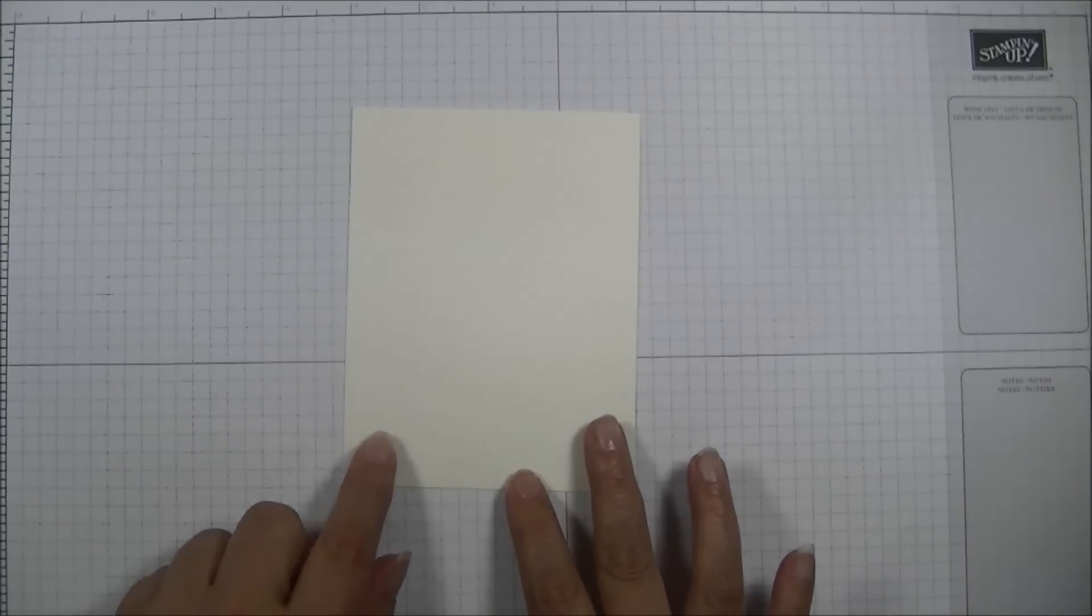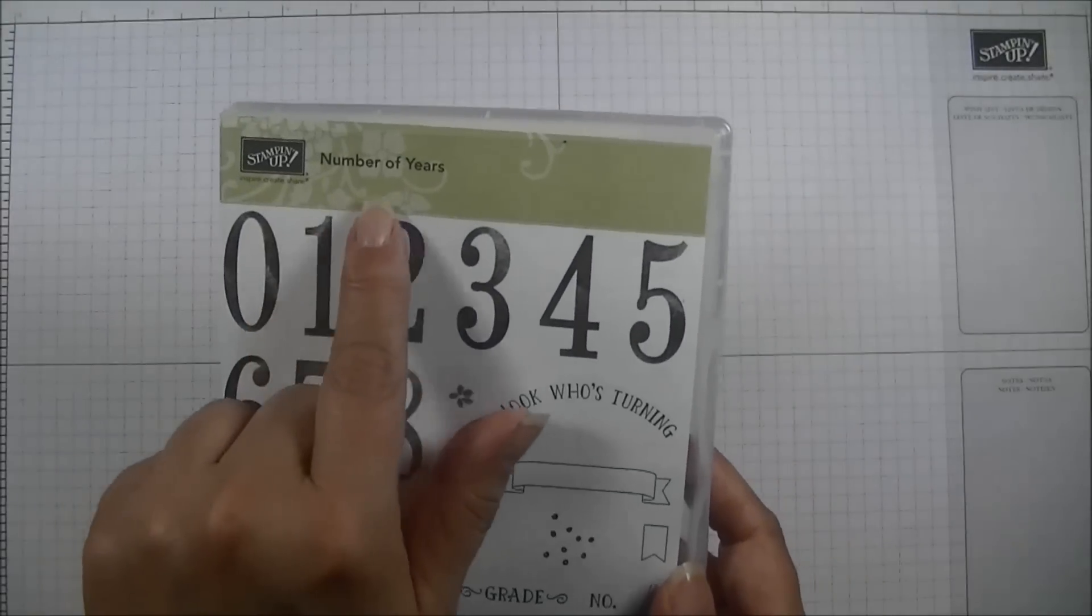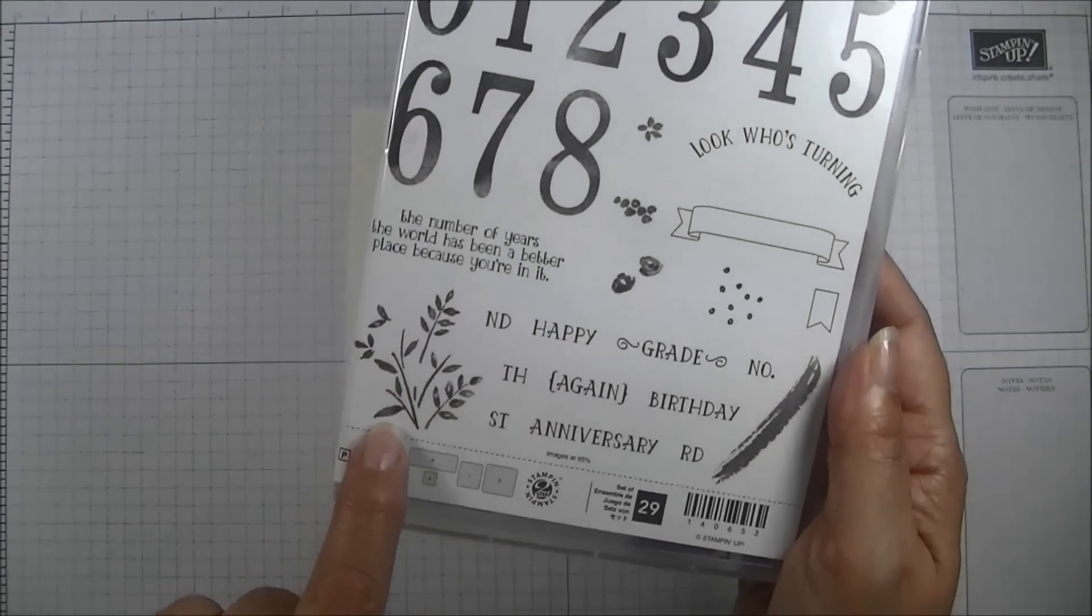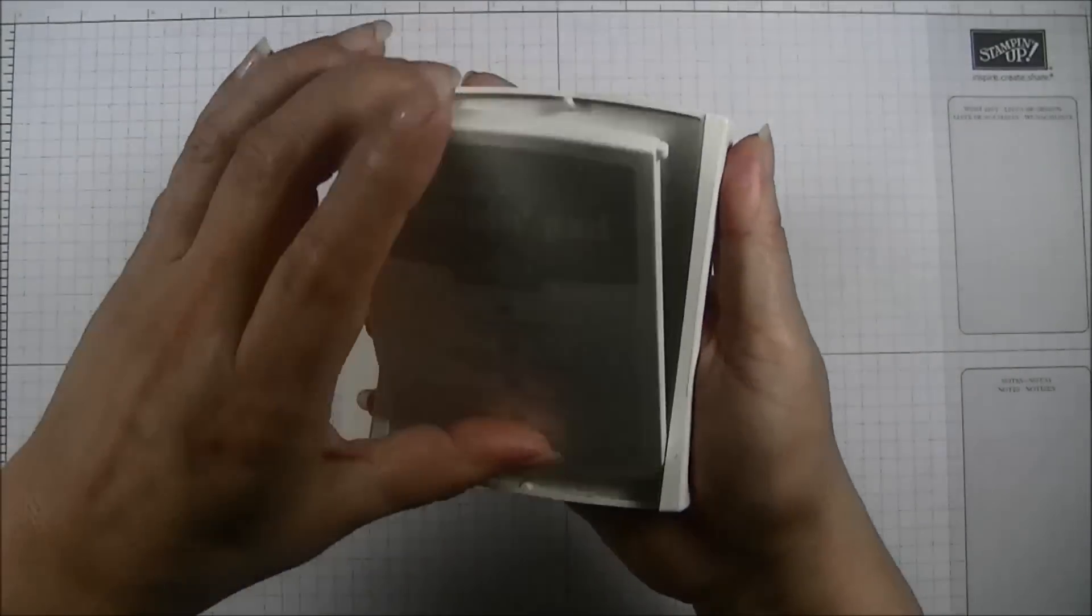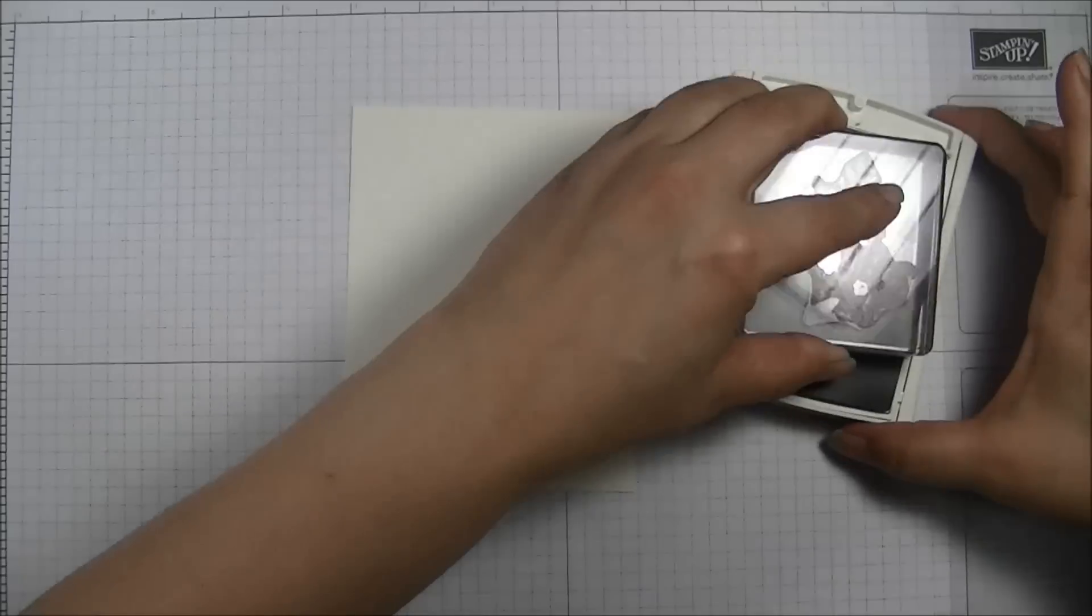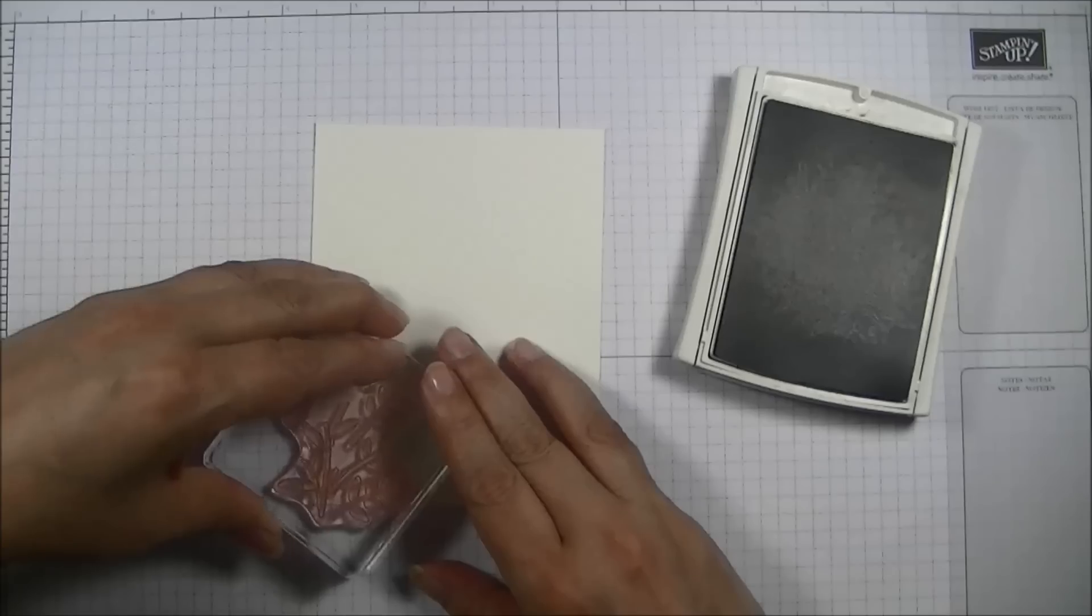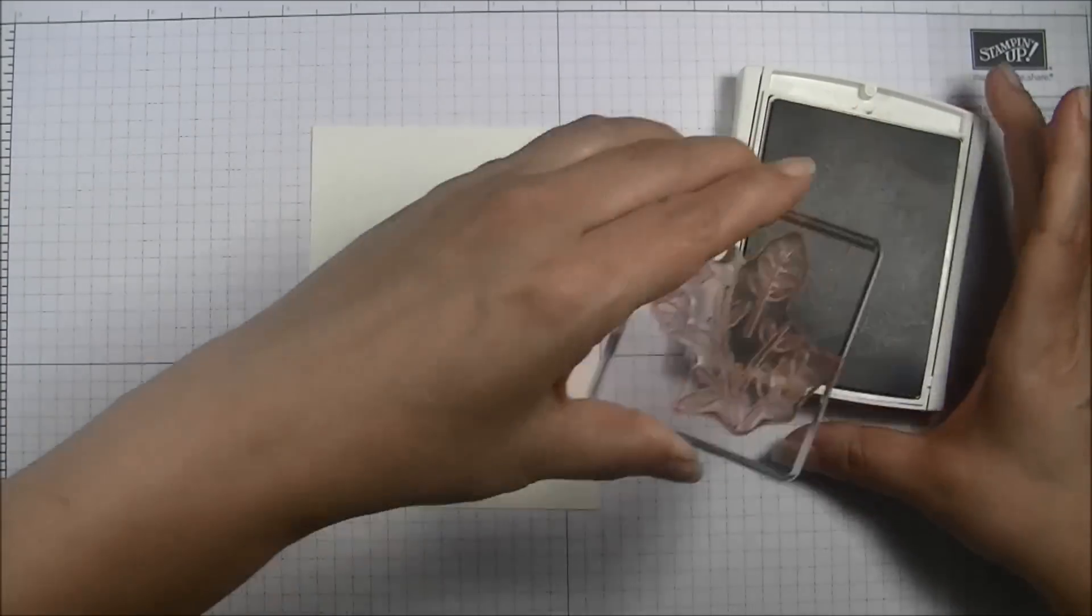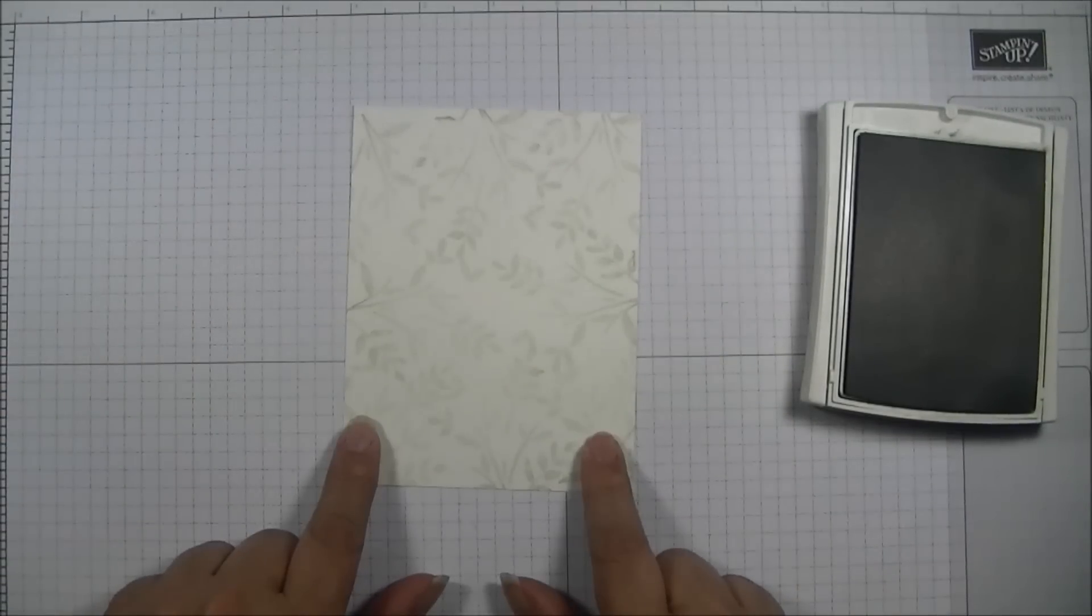We will get started with our very vanilla card front and the Number of Years stamp set. We are going to do some background stamping using the stamp here and the Sahara Sand. I am going to ink her up and then I am going to proceed to cover the entire card front with this stamp. There is my card front after the first step.